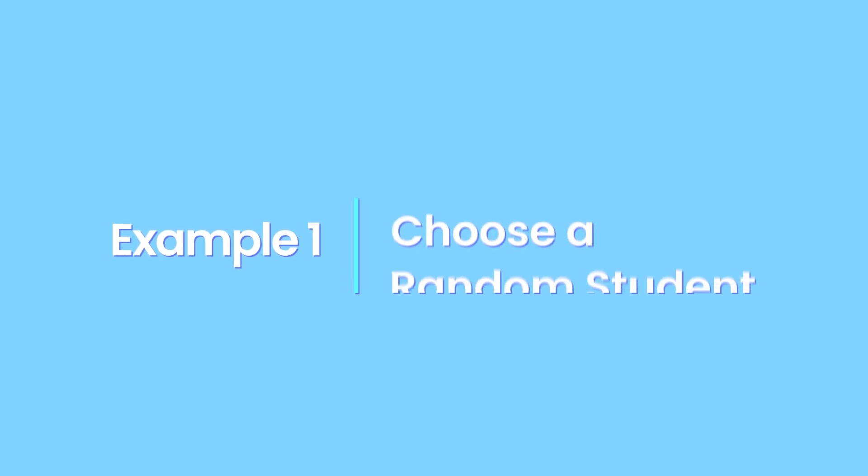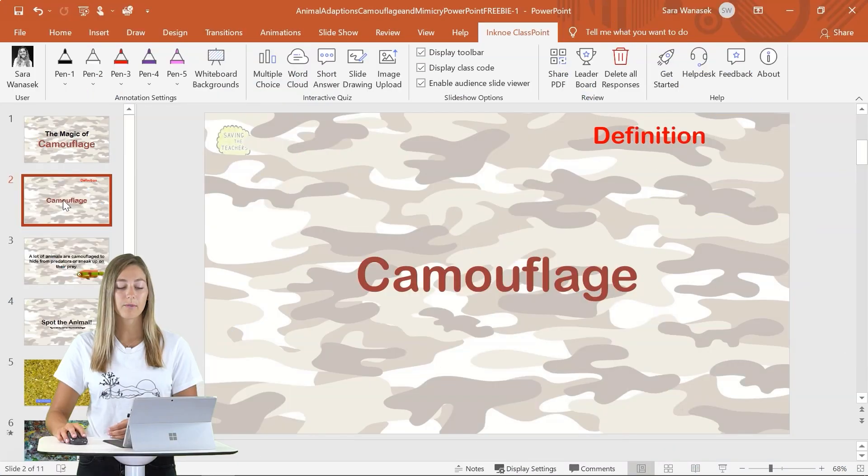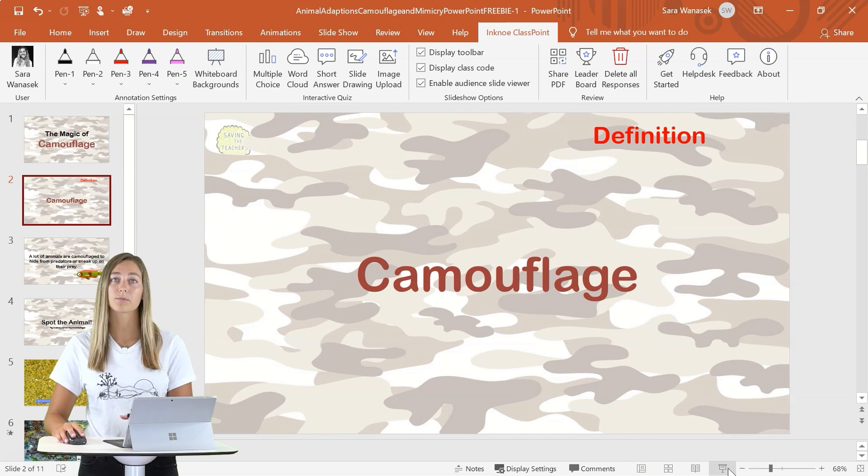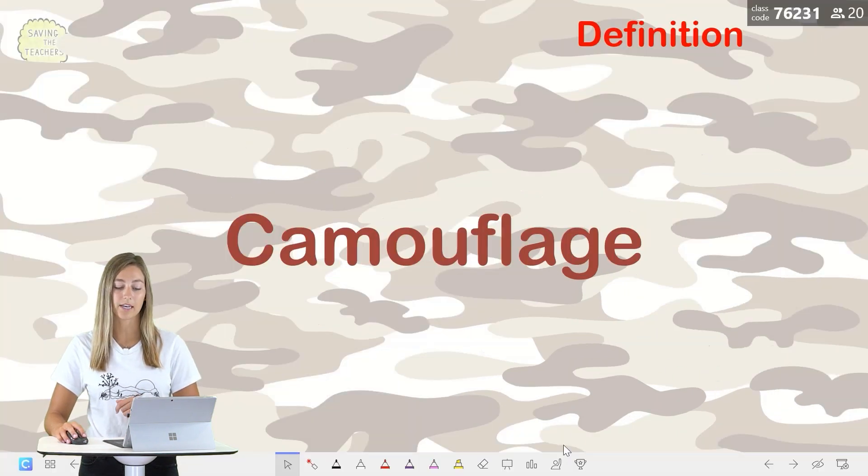Let's get started with use case number one. The first way to use pick a name is to randomly call on your students. I have a slide deck pulled up here and I want to ask my students about their definition of camouflage. I know that if I ask them out loud, I won't have a whole bunch of hands raised and willing participants. So if I'm in presentation mode on the ClassPoint toolbar, I can use the pick a name feature.